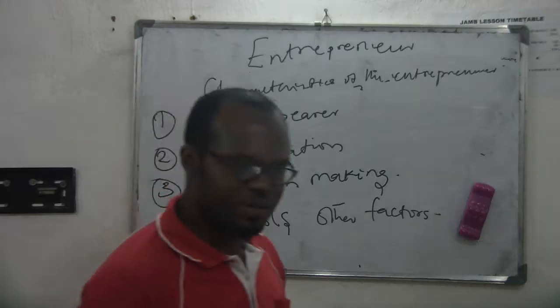And finally, the entrepreneur is always the person that controls the other factors of production. The other factors of production that the entrepreneur controls are capital, land, and labor. The entrepreneur controls all other factors of production — and that's where we end today.